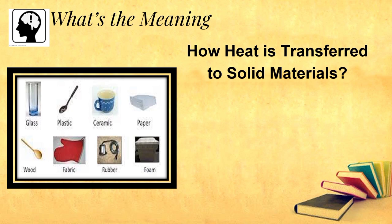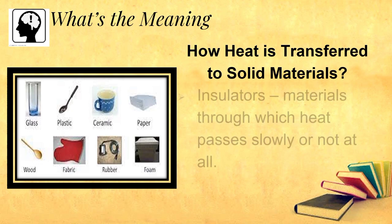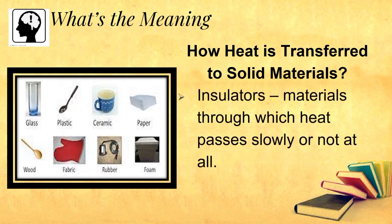On the other hand, there are materials through which heat passes slowly or not at all. We call these insulators. Some good insulators are wood, plastic, and ceramic. Others are glass, paper, fabric, rubber, and foam.